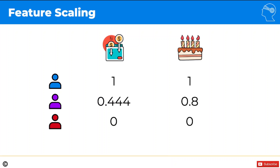Based on this data, which do you think the purple person is closest to? The answer is clear. The purple person is almost right in the middle between the red and the blue people — they're at 0.444. In the age column, the purple person is clearly closest to the blue person. That's a quick but illustrative example of feature scaling. I hope you enjoy the practical tutorials. I look forward to seeing you back here next time, and until then, enjoy machine learning.